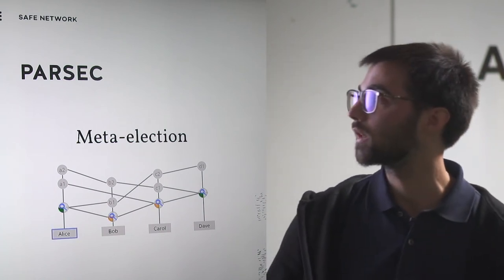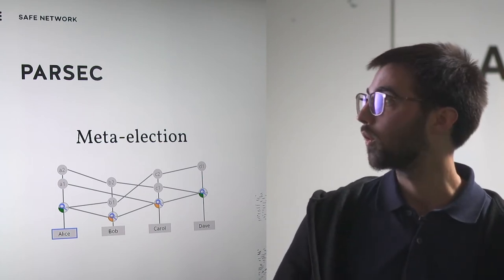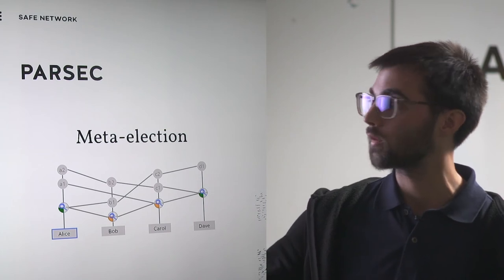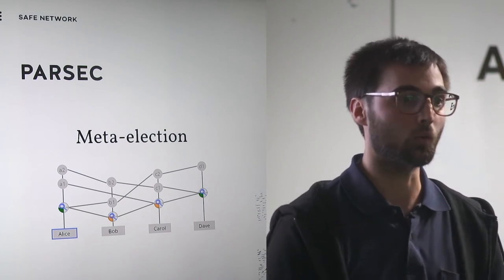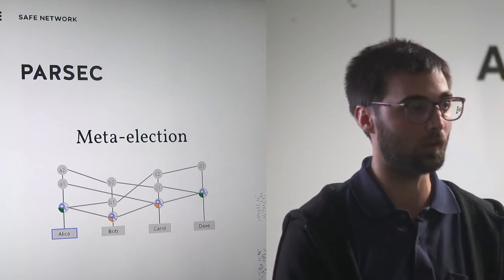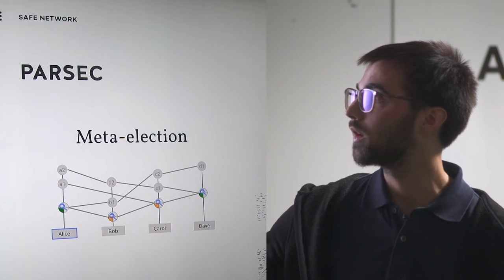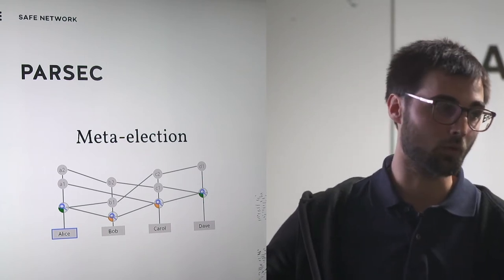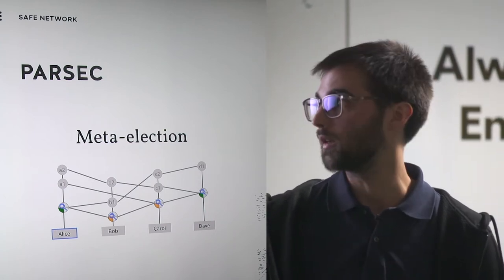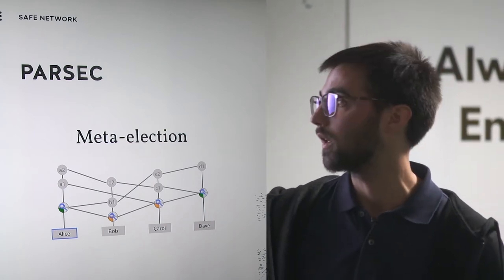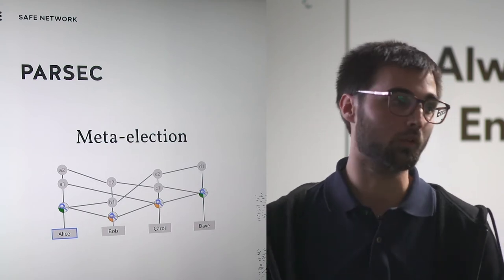Giving an example with colors — green is true, orange is false. These are all observers and we're asking: should we consider Alice's event in particular? The question is: has A0, the first observer from Alice, strongly seen the interesting event from Alice? The answer is yes for A0, no for B0, no for C0, and yes for D0.